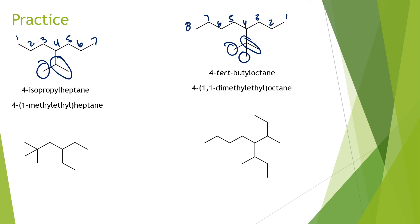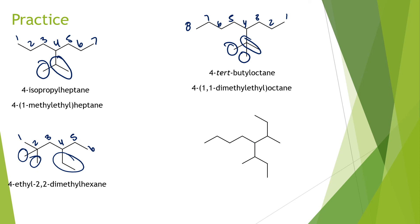In the next problem, it looks like there is a tert-butyl group, but two of those carbons are actually part of the overall longest carbon chain. Numbering gives a six-carbon parent chain, so the parent name is hexane. We have a 4-ethyl substituent and two methyl groups on carbon two, giving 4-ethyl-2,2-dimethylhexane.